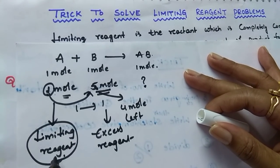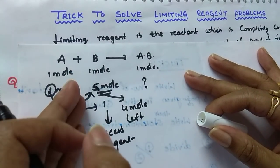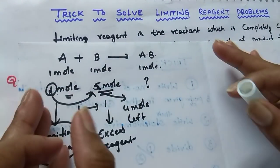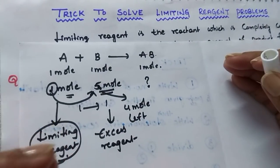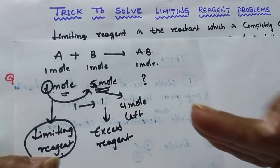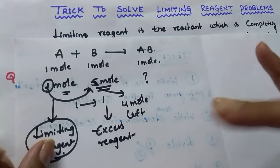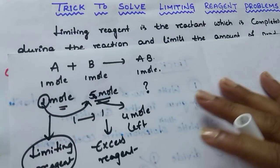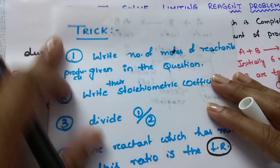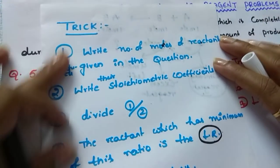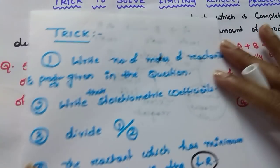In short, the limiting reagent is the one which is completely — 100% — consumed during the reaction. It is present in the smaller amount and it is completely consumed. Now let us solve some questions. Before solving these questions I will tell you a very nice trick. By using this you can solve the problems easily without any confusion.